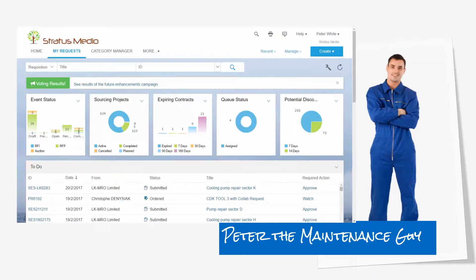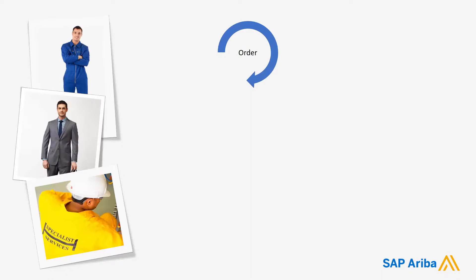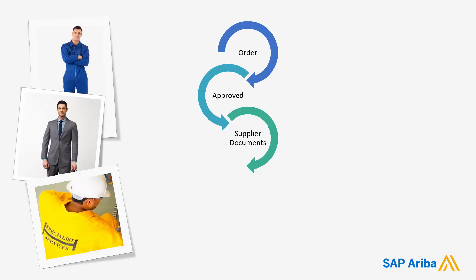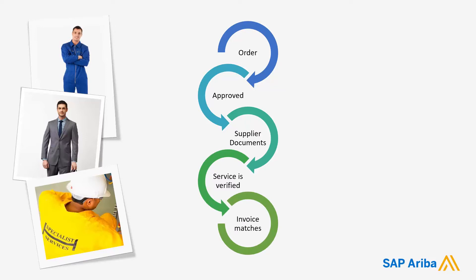At this point, the supplier is able to convert the service entry sheet into an invoice, just as we saw in the first scenario. At the end of the day, it's not just about Peter and Gene working together to send a purchase order to the supplier — it goes further. It ensures compliance: from an approved purchase order, where the supplier provides documentation to verify the service was properly delivered, so that when the invoice comes in, it matches. This is what this process looks like using the SAP Ariba tools.